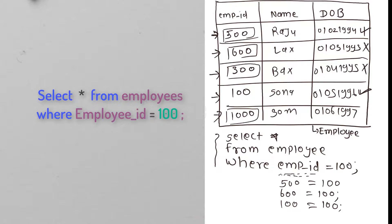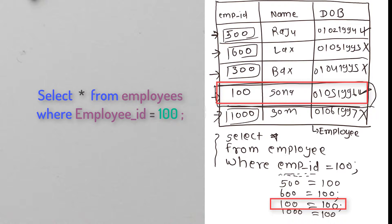The cursor then moves to the next row (1000). Again the value is substituted and it checks whether left-hand side equals right-hand side — in our case it does not, so it is marked as NO. Finally, it looks at all rows marked as YES. In our case, only one row is marked YES, so only that row will be picked up and displayed on the screen.